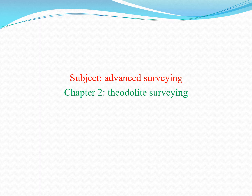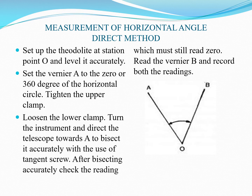In the last lecture we discussed the temporary adjustments of the theodolite. We are discussing measurements of angles. To measure the horizontal angle using a transit theodolite, there are two methods: the first is the direct method and the second is the repetition method.